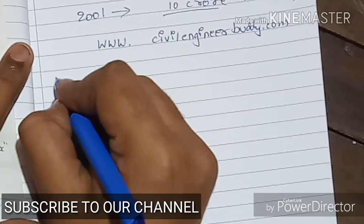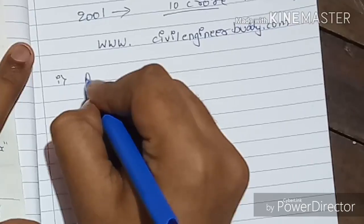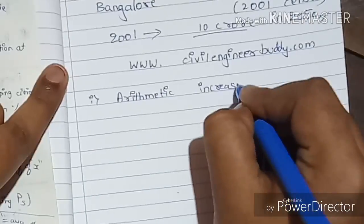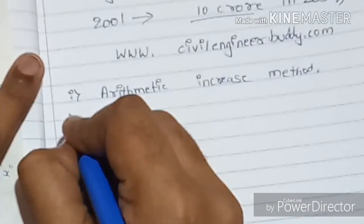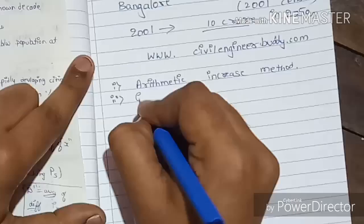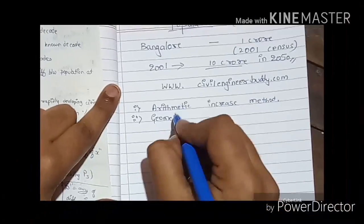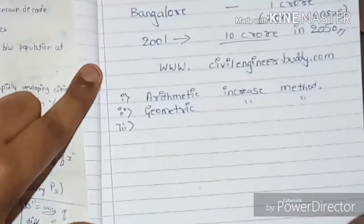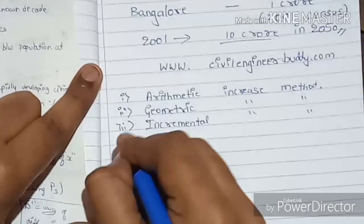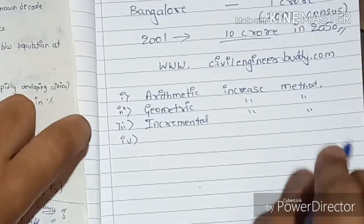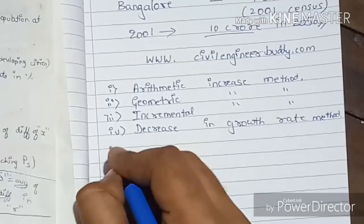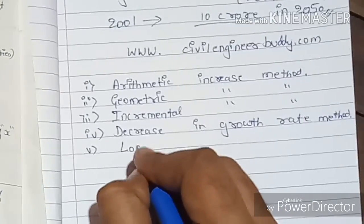The first method is the arithmetic mean method, also called the arithmetic increase method. The second is the geometric mean method, or geometric increase method. The third is the incremental increase method. The fourth is the decreasing growth rate method, and the fifth is the logistic curve method.